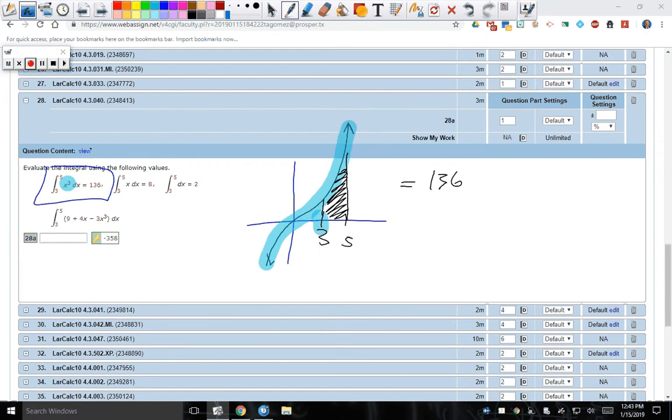Looking at this, from 3 to 5 of x is 8. And from 3 to 5 of just dx is 2. Now this x right here, let me do it in red. This would be if it was a line. So from 3 to 5, you can see it's going to be less. It's not drawn to scale, but it's going to be less, and the area is just 8.